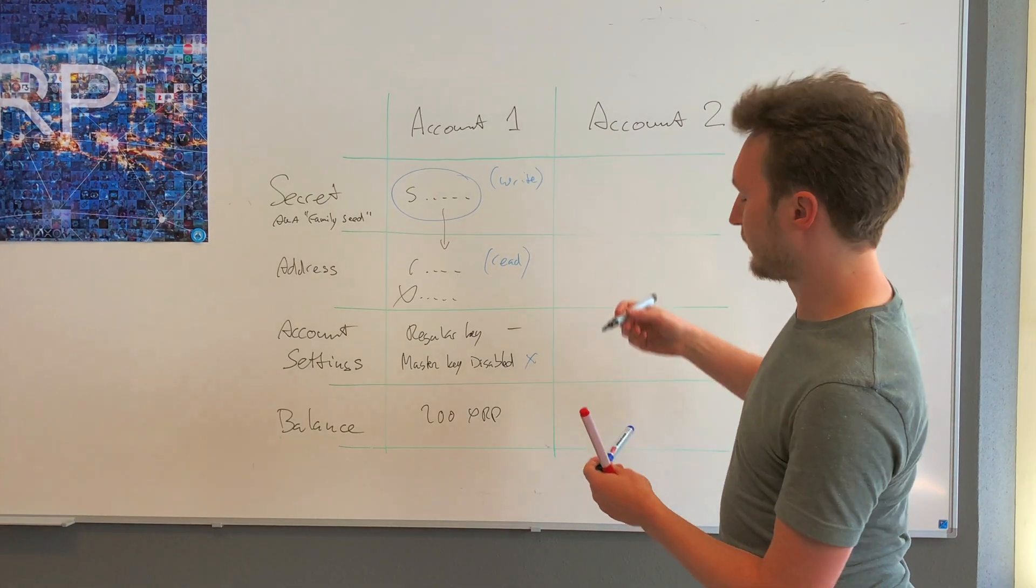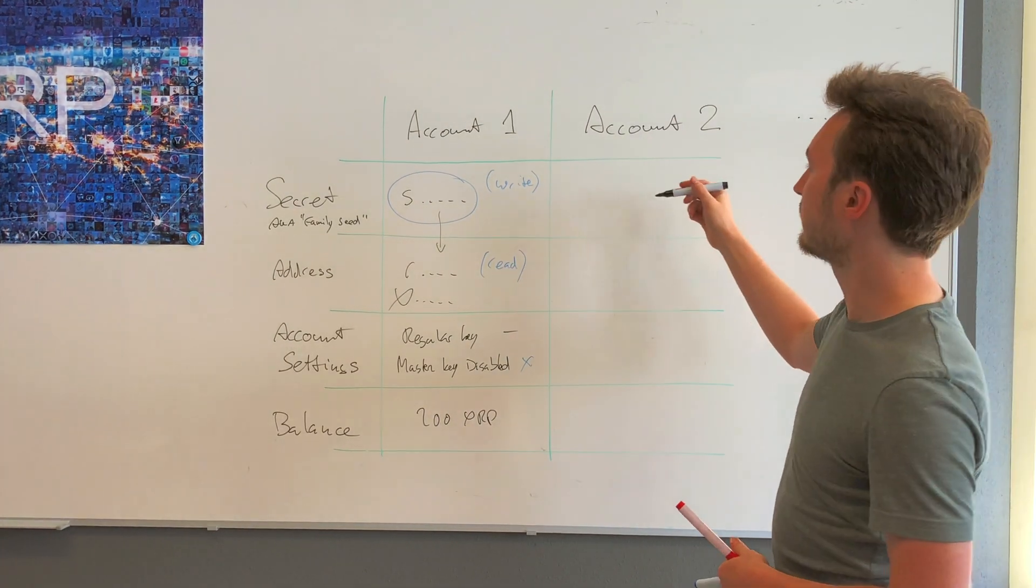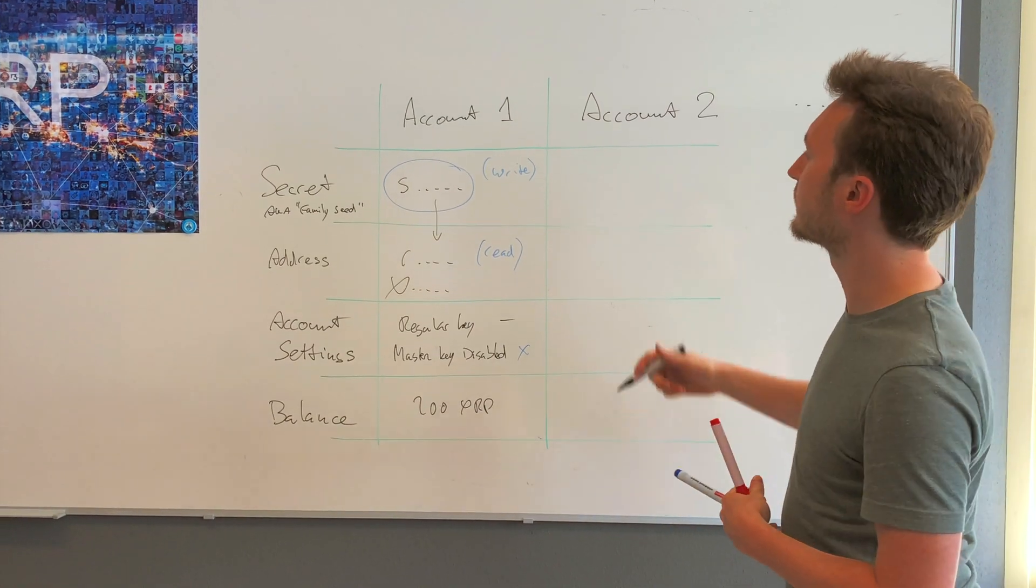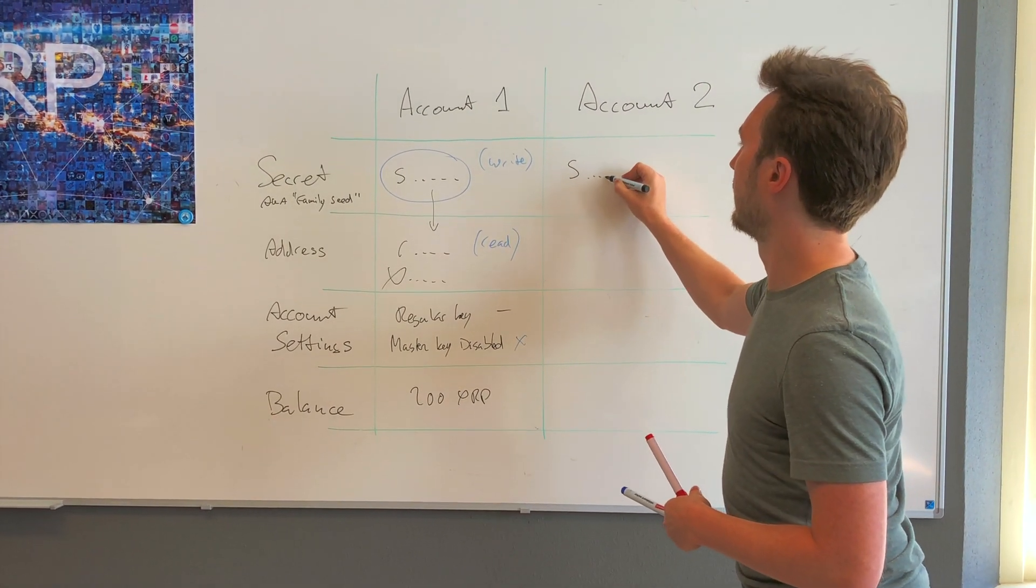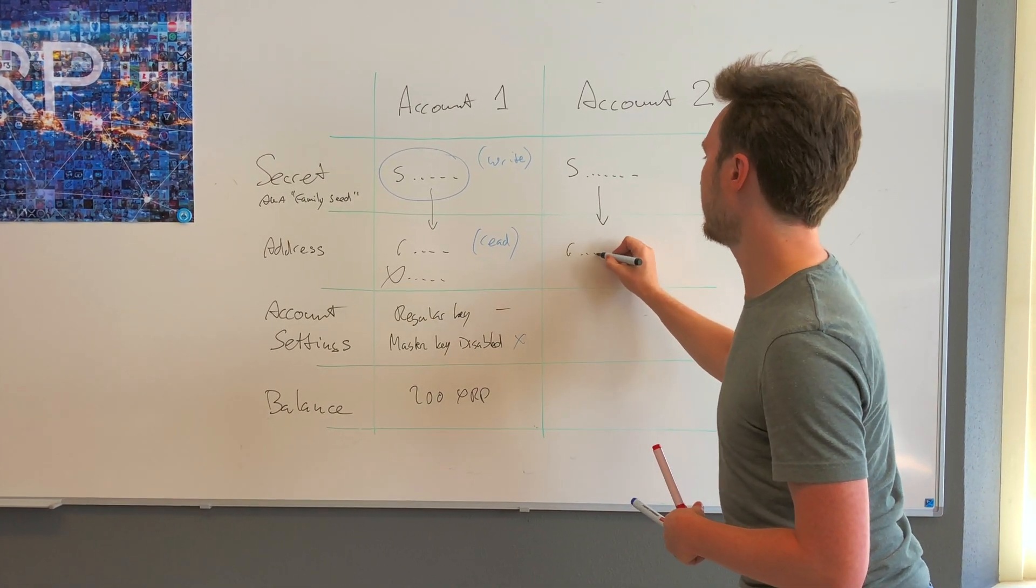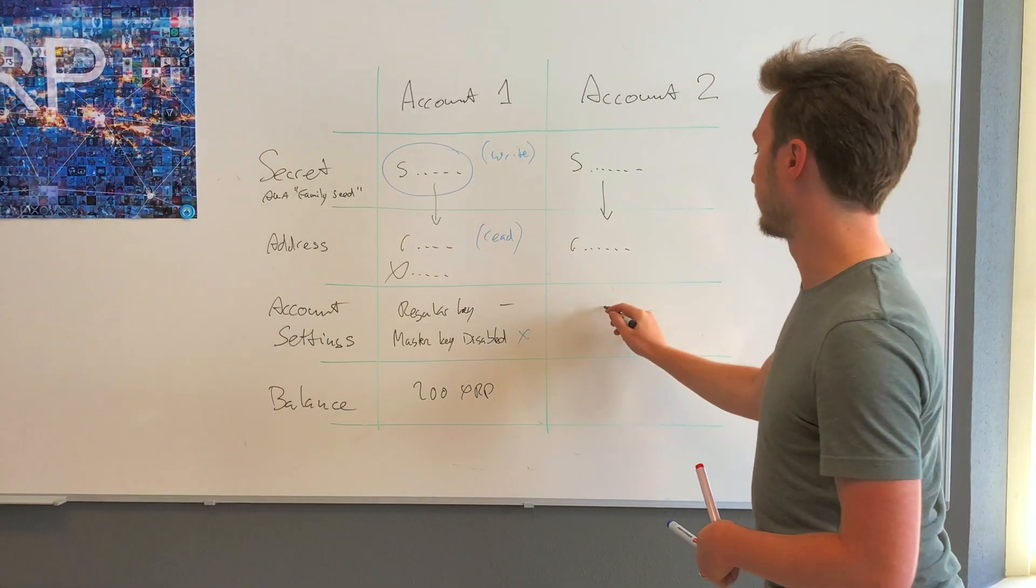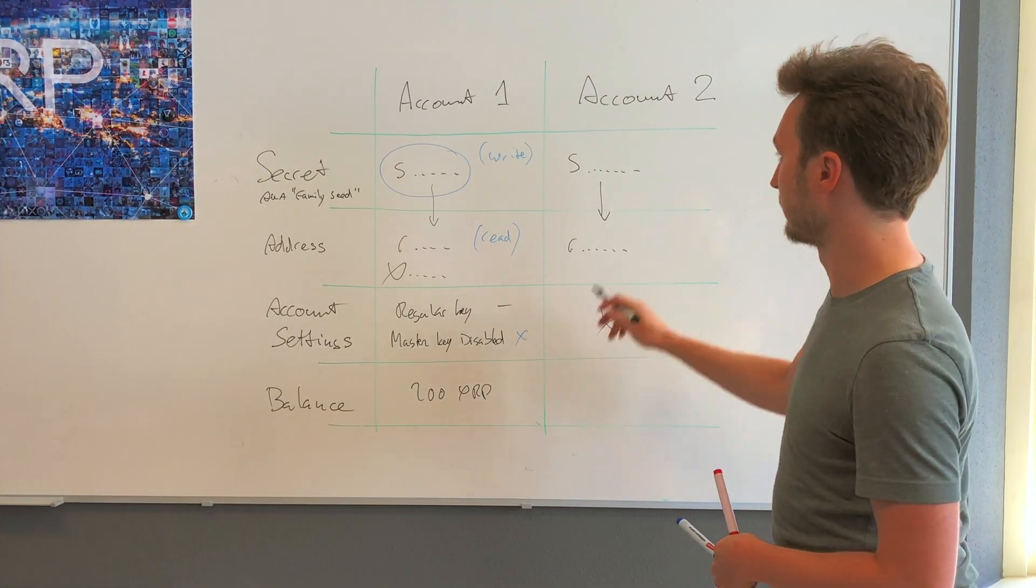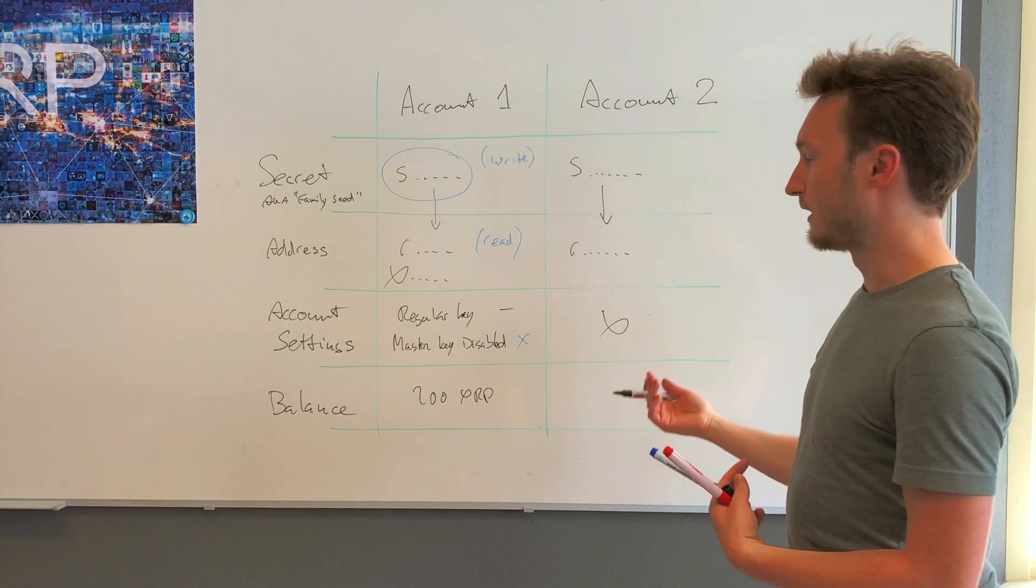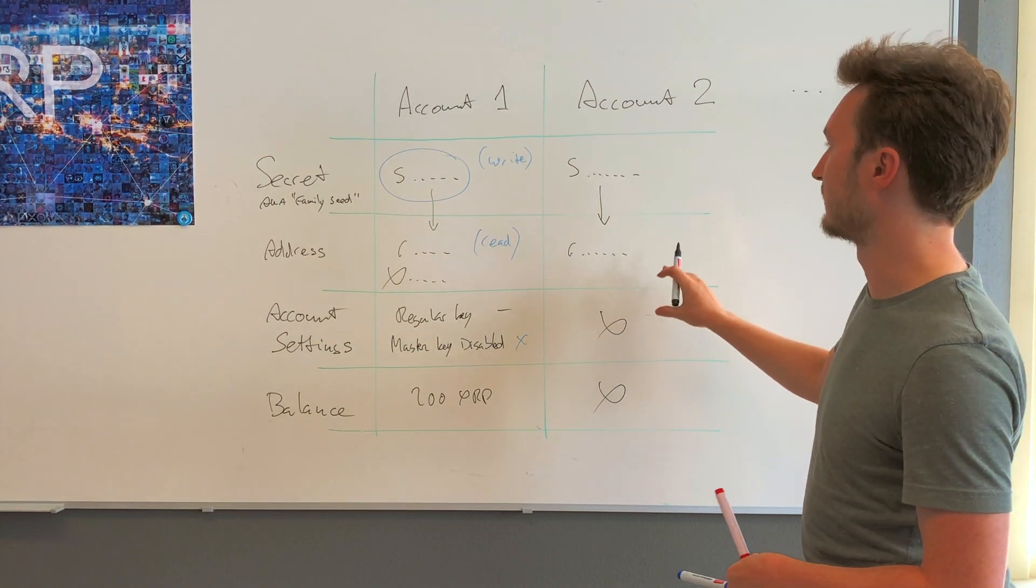If you generate a second account on the XRP ledger—it can be a paper account, Ledger hardware wallet, or Sum account—we can generate a secret again and derive that into the 'r' address, the public account address. There are settings for this account, but we're not going to use them. This account can be activated with 20 XRP and contain balance, and you can transact using this account, but we're not going to do that either. We're not even going to activate the second account we generated.